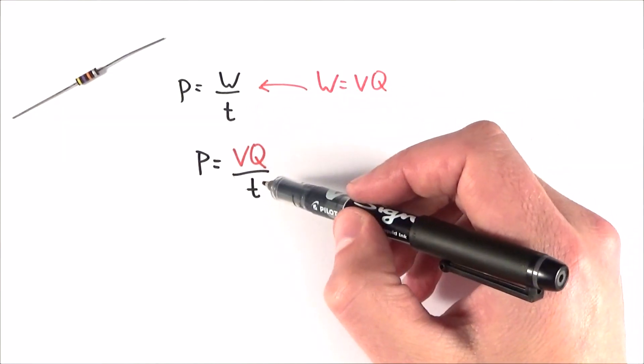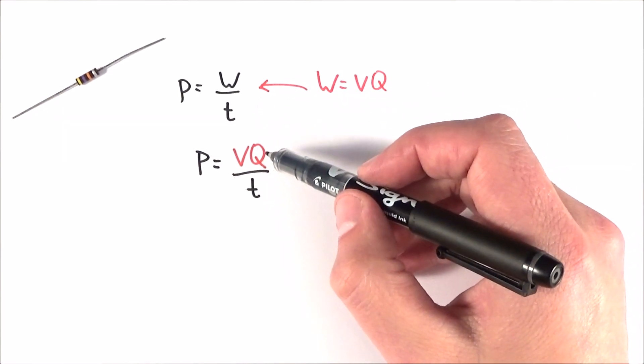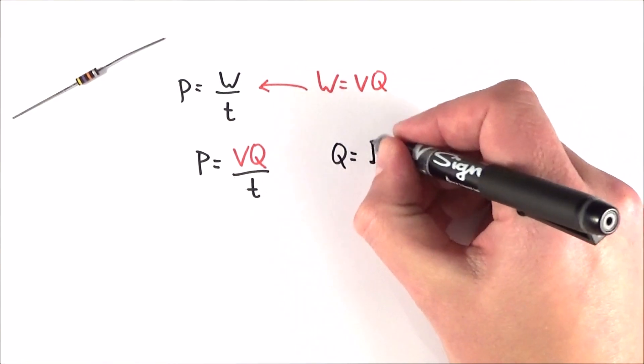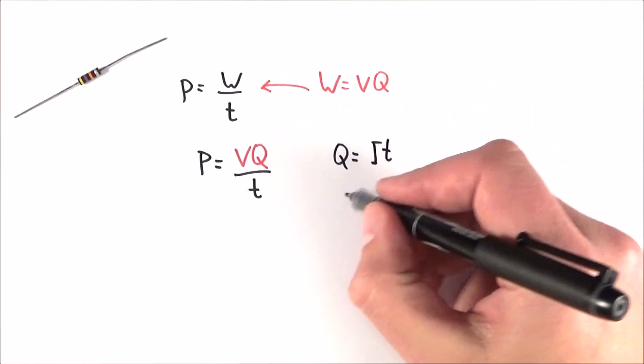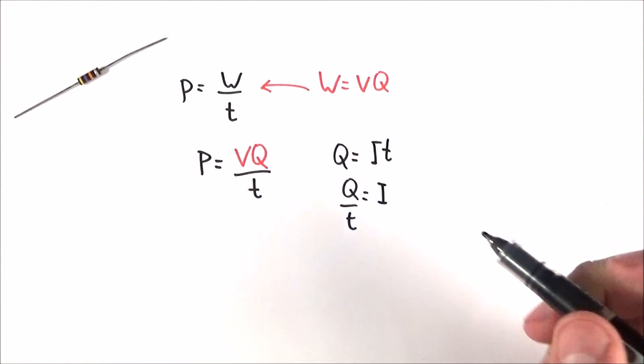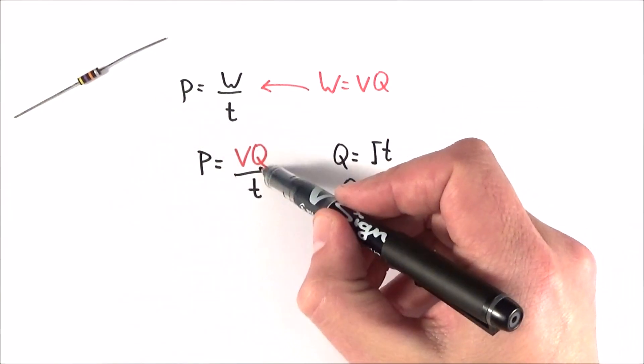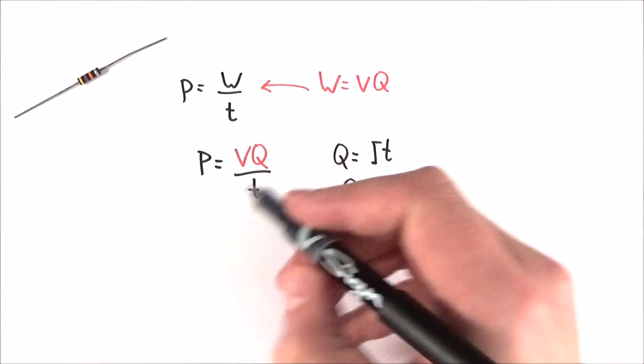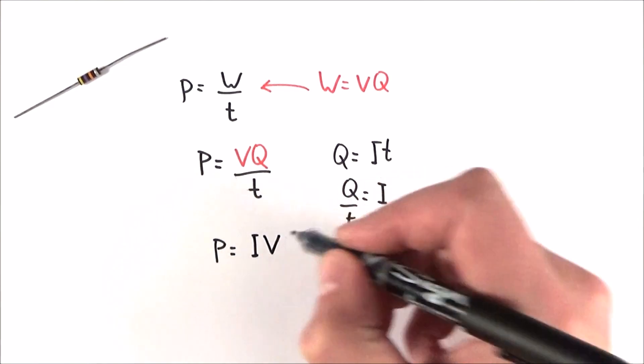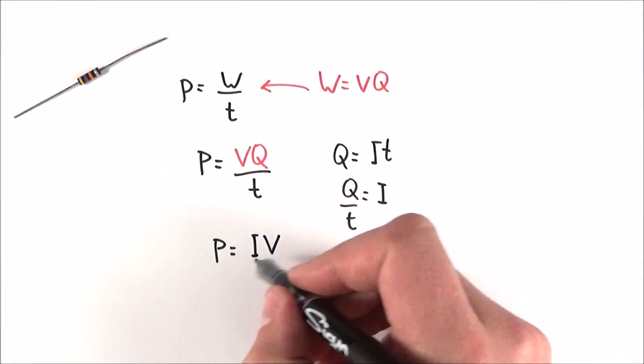Now, we can look at this in a bit more detail, and there's a link between the charge transferred and the time. And if you remembered the equation Q is equal to IT, we can also write this as Q divided by T is equal to I. And what I can then do is replace this Q over T with this term over here. So we can say that P is equal to I multiplied by V. And this here is the equation that you need to know about.